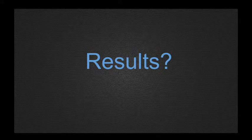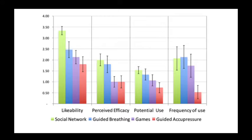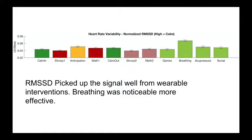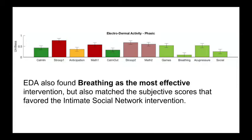And the results? The intimate social network support and guided breathing interventions yielded stronger, more uniform support. Subjective stress responses reflect well on the experiment design, with stressors and interventions showing clear differences. Heart rate variability was picked up well from wearable interventions, with breathing noticeably more effective. Electrodermal activity also found breathing as the most effective intervention, and matched the subjective scores that favored the intimate social network intervention.